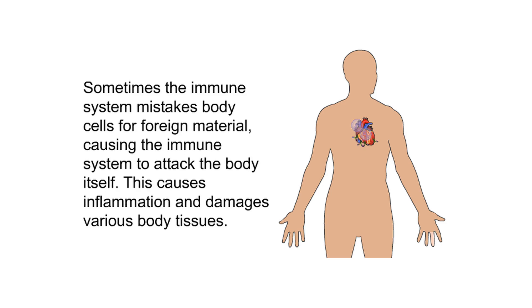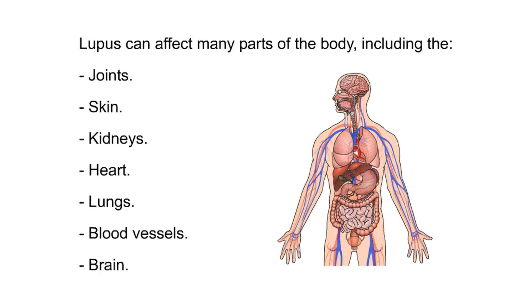Sometimes the immune system mistakes body cells for foreign material, causing the immune system to attack the body itself. This causes inflammation and damages various body tissues. Lupus can affect many parts of the body including the joints, skin, kidneys, heart, lungs, blood vessels, and brain.